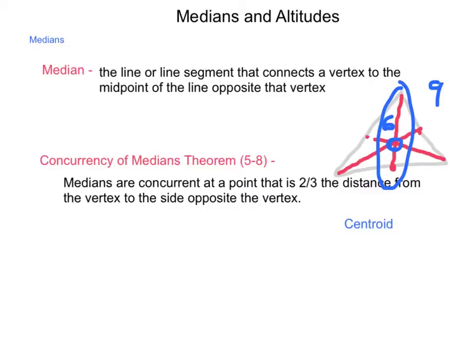And what the centroid acts as is the balance point, or the center of gravity, of the triangular shape. So if you have a triangle of uniform thickness and density, the centroid is where you could place a pin underneath it, and the entire structure would balance on that pin point.